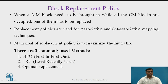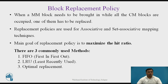In set associative and fully associative methods, block replacement policy is required, because there we can map any block of main memory to any line of the cache. That is why we need to decide which block to be replaced. So, block replacement policy is used for associative and set associative mapping techniques, and it is not applicable for the direct mapping technique.